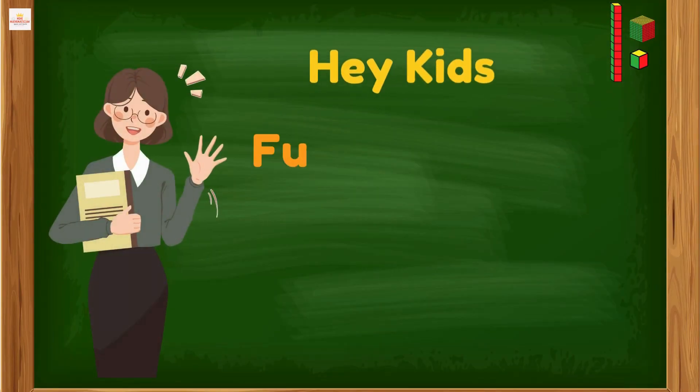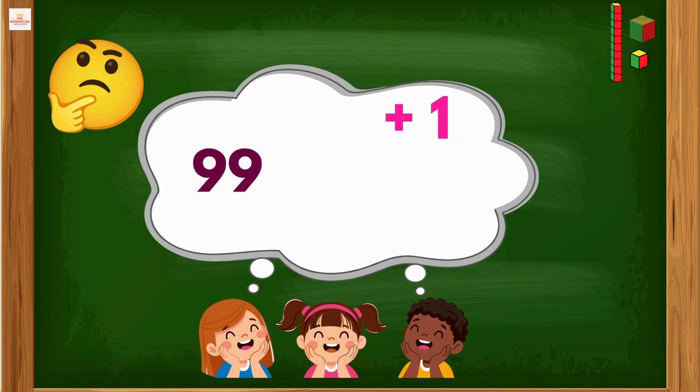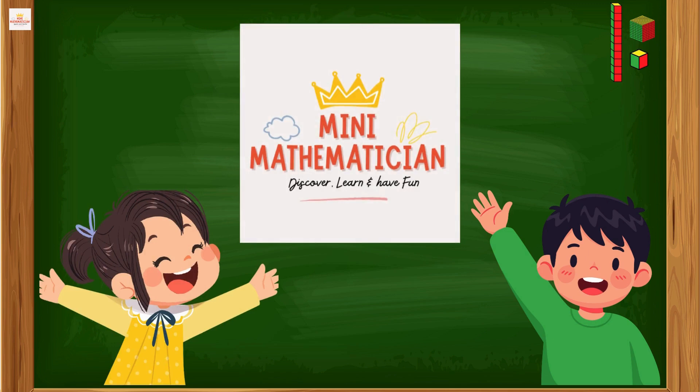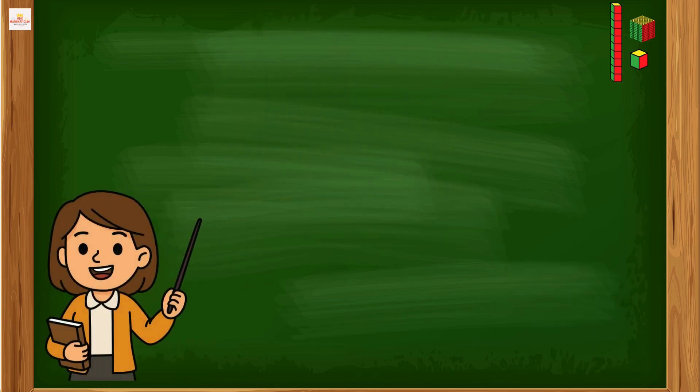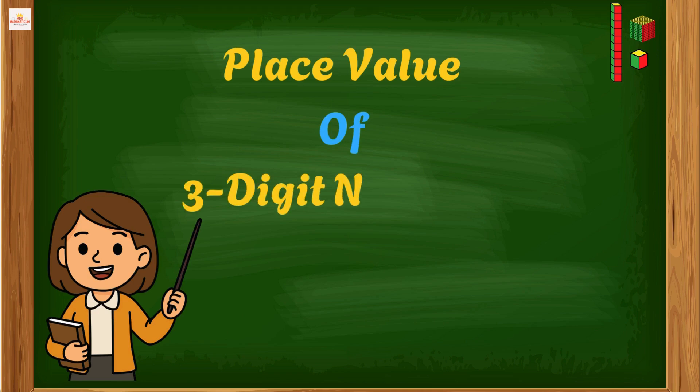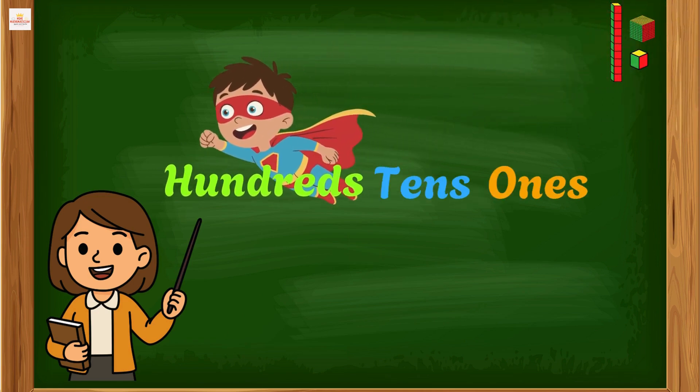Hey kids, I have a fun challenge for you. Can you think of a number that is bigger than 99? What happens when we add one more digit? Let's find out. Hello mini mathematicians, welcome back. Today we are going to learn about the place value of three digit numbers and meet a new number friend: the hundreds.